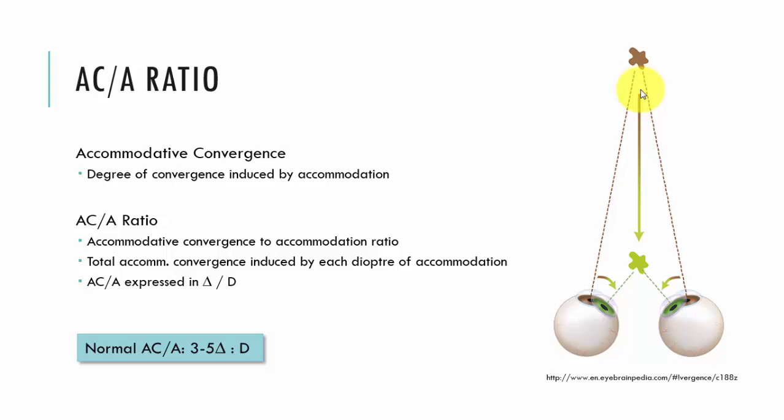If there was a change of two diopters between those two distances, we would double those numbers — there'd be a change of six diopters, and so on.